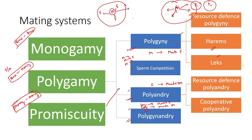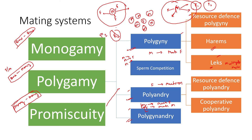In leks, multiple males try to mate with a particular female — they all come together and compete. This is prominent in black grouse, sage grouse, and other birds, as well as in fruit flies and peacocks, where all males come together and display or dance. In leks, multiple males try to woo one female; once one moves on, others continue. A particular female is wooed by multiple males simultaneously.